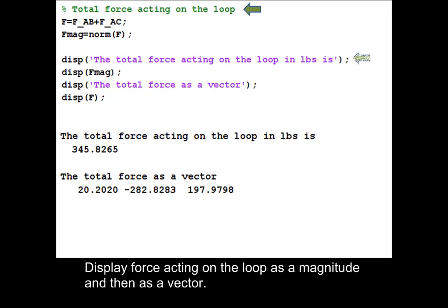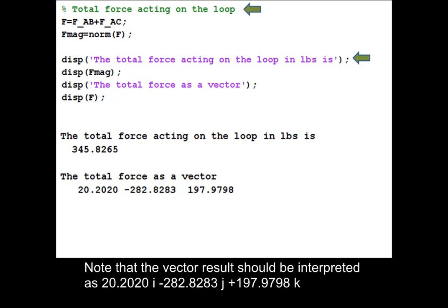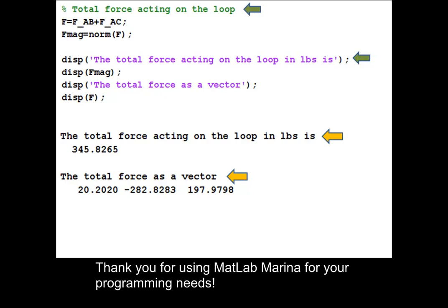Display force acting on the loop as a magnitude and then as a vector. Note that the vector result should be interpreted as 20.2020i minus 282.8283j plus 197.9798k.